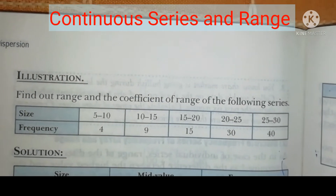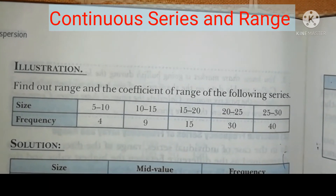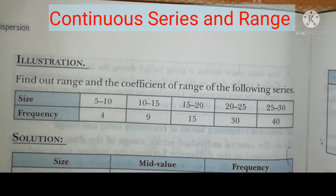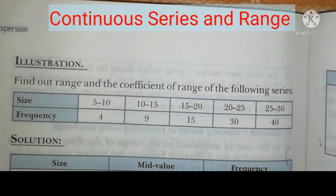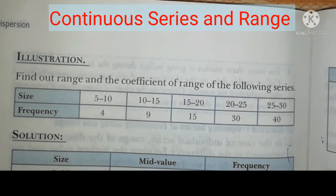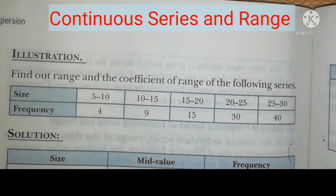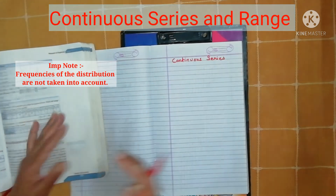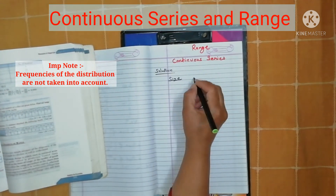Here is an illustration using the first method to find out the range and coefficient of range. The question is: find out the range and coefficient of range of the following series — sizes: 5 to 10, 10 to 15, 15 to 20, 20 to 25.